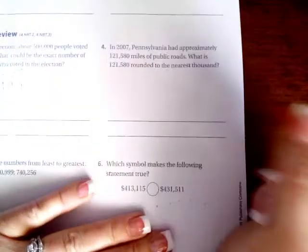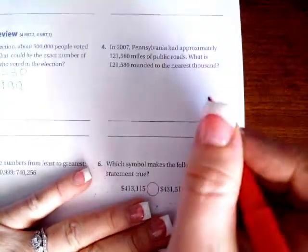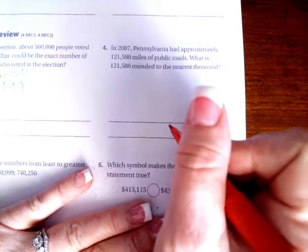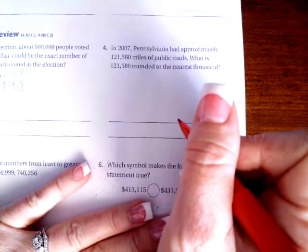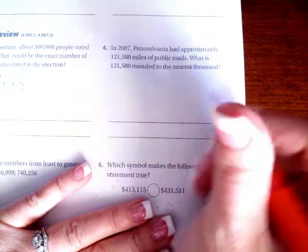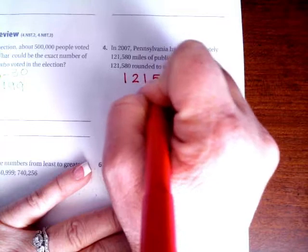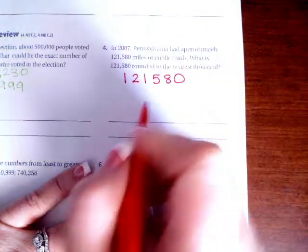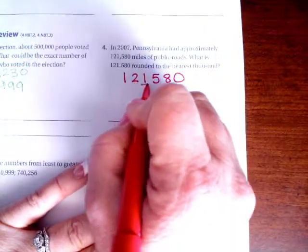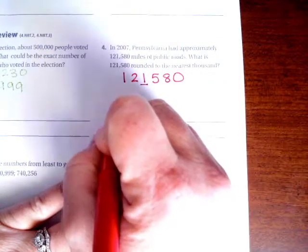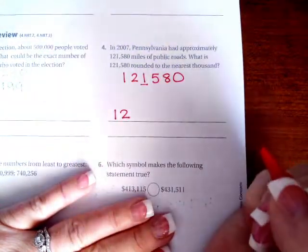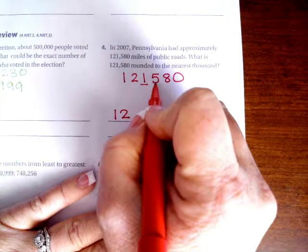Number four: in 2007, Pennsylvania had approximately 121,580 miles of public road. What is 121,580 rounded to the nearest thousand? So one, two, one, five, eight, zero. And it wants it rounded to the nearest thousand. Which means that the numbers before it are going to stay the same. And then we're going to look at the five here.